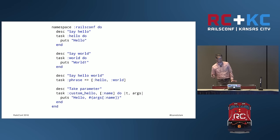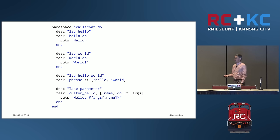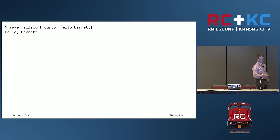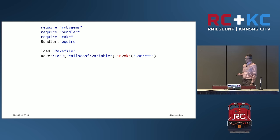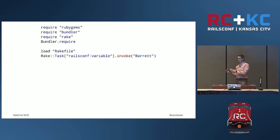Now we have a fourth task that takes a parameter — it takes an argument. It has one argument: 'name'. In that block it comes in as an args hash — similar to the params hash in a controller, we have the args hash in the rake task, and idiomatically we call it args. So we run `rake railsconf:custom_hello[Barrett]` and it says 'hello Barrett'. Here's how we would run it from a Ruby script — you can invoke rake tasks from inside Ruby. Just require rake, load the rake file, then `Rake::Task['the_name'].invoke`, and any parameters go in the parentheses.